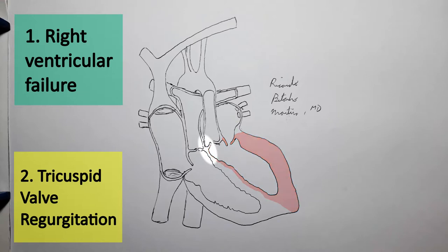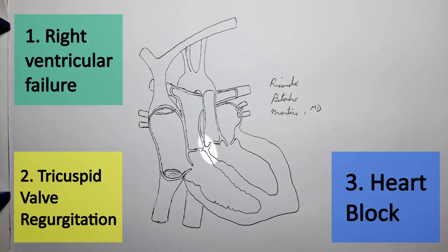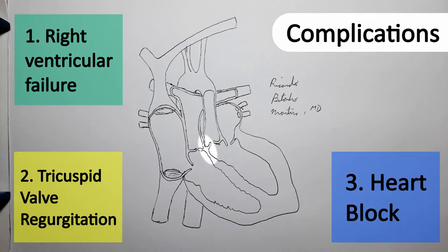There is a 2% chance of heart block each year, and complete heart block requiring a pacemaker is actually quite common. As a general rule, because of these anatomical alterations to the AV node, pretty much all patients will be somewhat bradycardic.